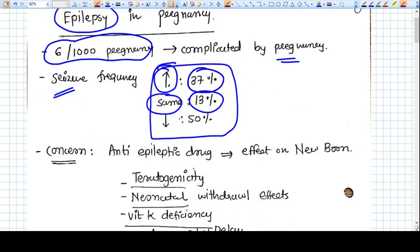So on an average pregnancy decreases seizure activity but it can increase in 37%.